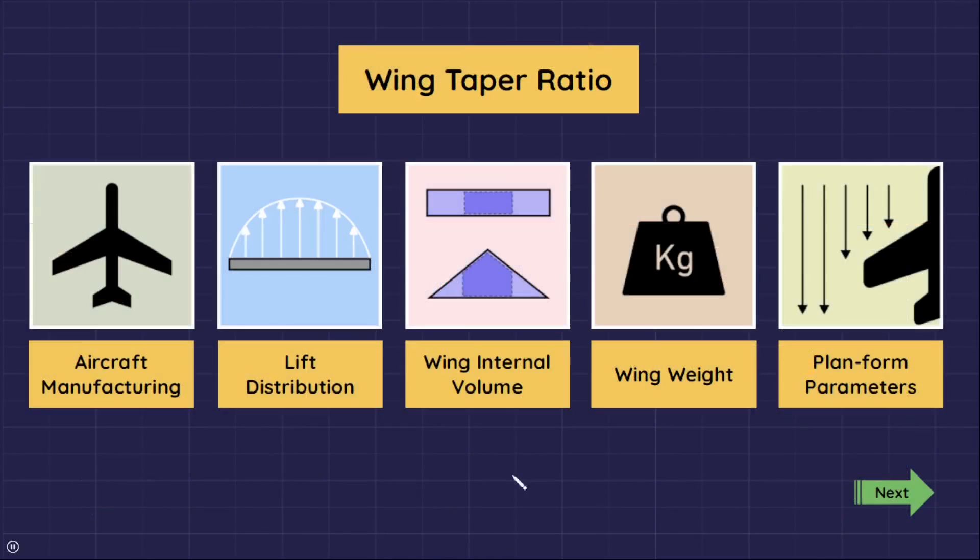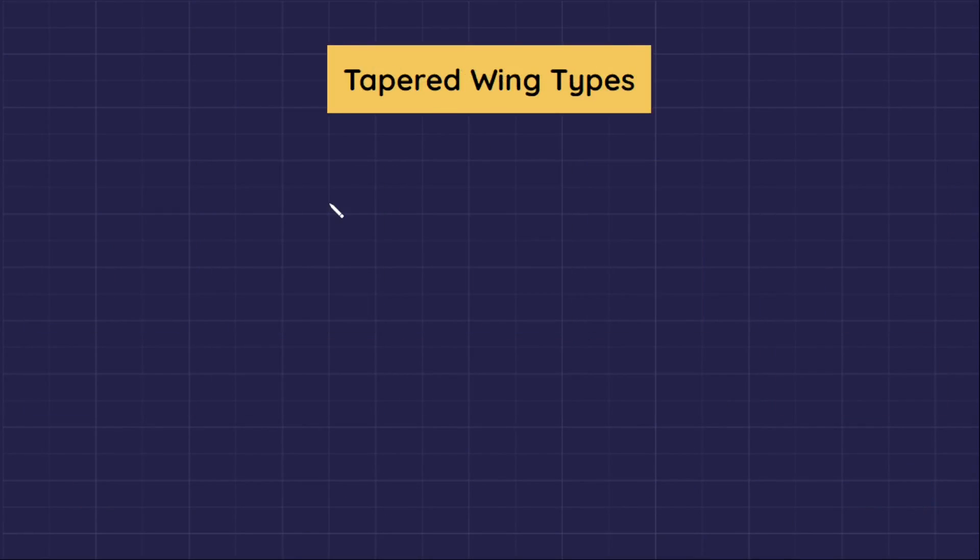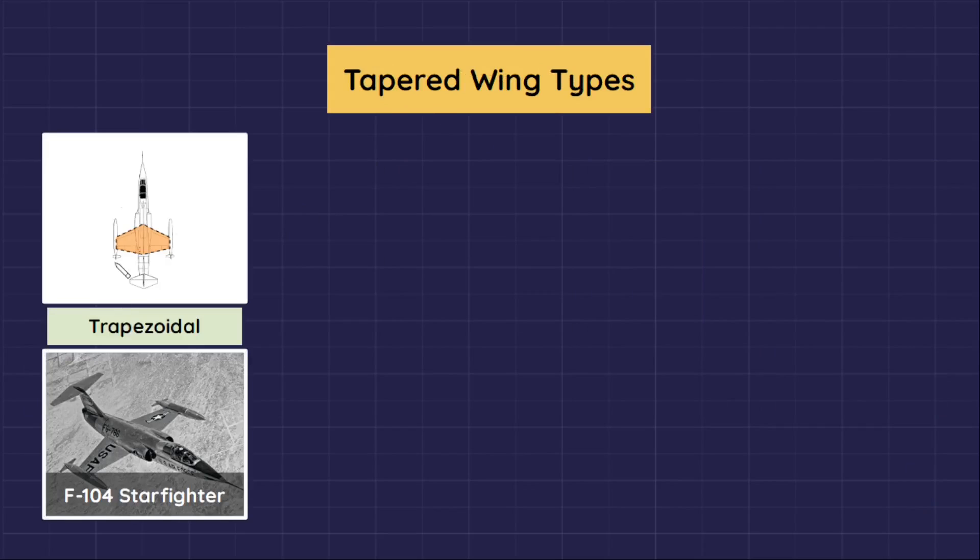We have several types of tapered wing. Trapezoidal, which is a straight-edged and tapered wing planform, and it may have any aspect ratio and may or may not be swept, the taper ratio is less than one but greater than zero.